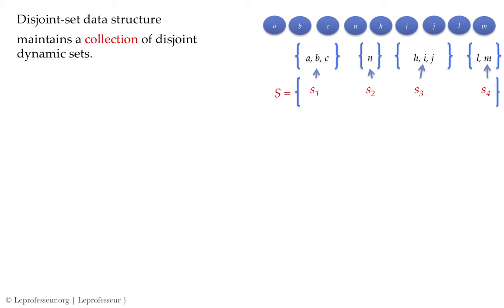You can think of it as one big set S containing smaller sets: S1 has elements a, b, c; S2 has one element; S3 and S4 similarly. This is a disjoint set data structure. S1 and S2 have nothing to do with each other, and similarly for other pairs. If any element from one set makes a relationship with an element from another set, we need to merge those two sets.